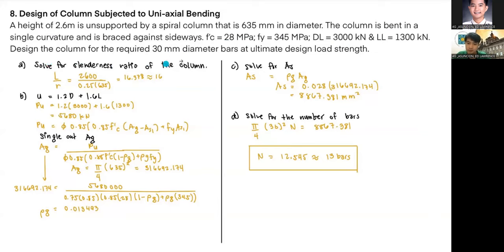Our first step is to solve for the slenderness ratio of the column. We have L over R, which is 2,600 over 0.25 times 625, giving us 16.378. Our next step is to use this formula for the ultimate load, 1.2 dead load plus 1.6 live load, giving us 5,680 kilonewtons. We'll use the value for Pu here.